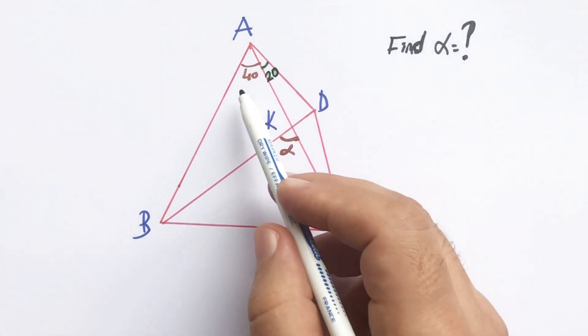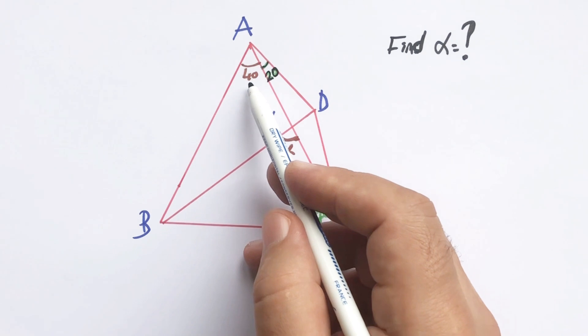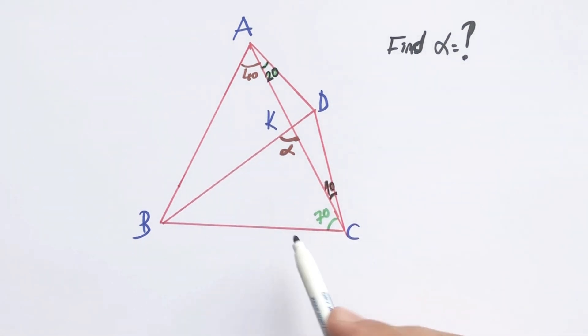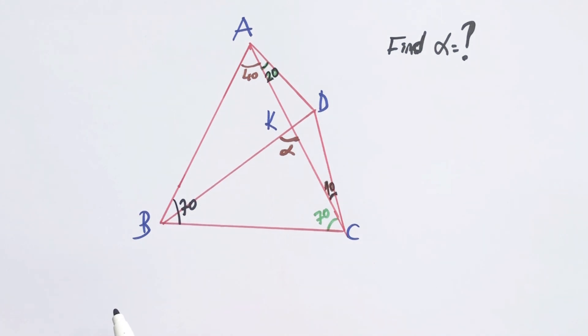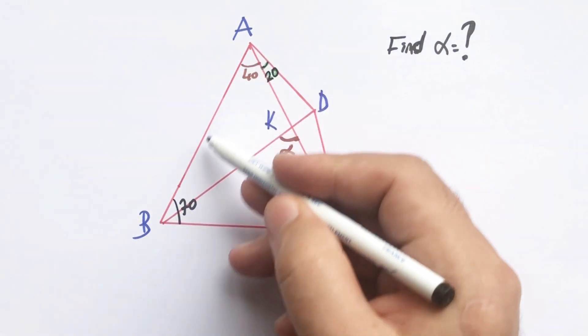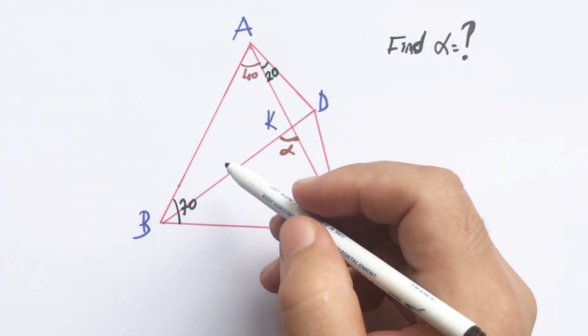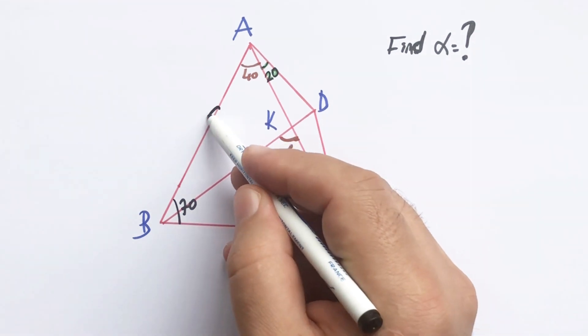First step, we know that in a triangle the sum of the interior angles must be 180 degrees, so here is 70 degrees. Therefore, we have an isosceles triangle.